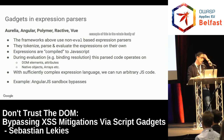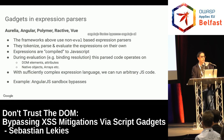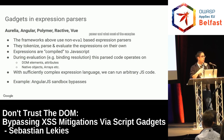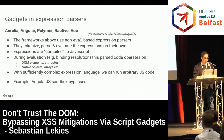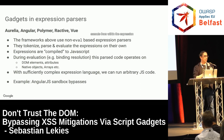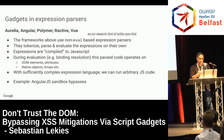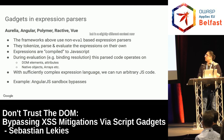An obvious example is the whole family of AngularJS sandbox bypasses. AngularJS has a custom-based expression parser. What most of the sandbox bypasses for AngularJS showed throughout the last year is that you can escape this parser or escape the execution environment — a virtual sandbox that tries to limit what you can execute from within the expression language — and get to arbitrary execution. Our research builds upon that, but in a slightly different context.